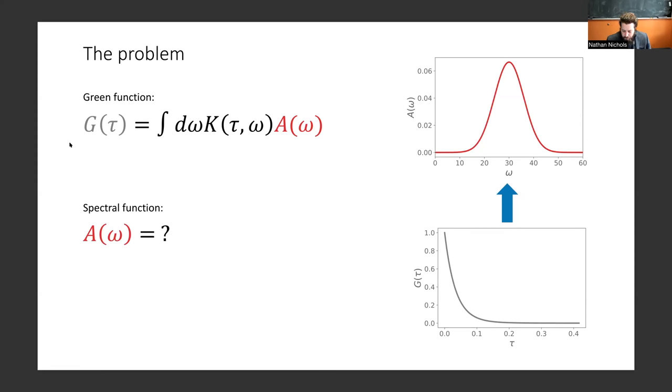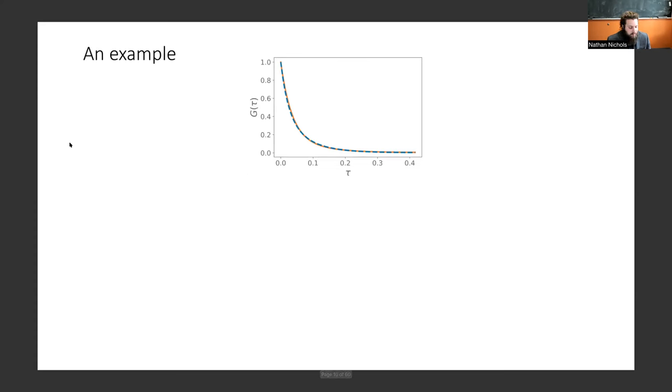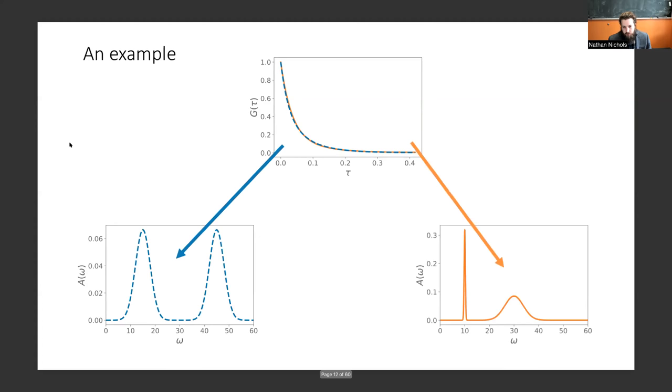How could we approach this problem? One simple approach would be to discretize the integral and then do some linear algebra to achieve the spectral function. But this approach doesn't really work in practice. This inversion under these kernels is an ill-conditioned problem. As you can see, we have two imaginary times Green's functions here, the blue dashed and the orange solid. These are drastically different spectral functions where we have shifts in the peak locations and different peak intensities and widths. Also, the imaginary times Green's functions aren't very different than within the typical quantum Monte Carlo error estimates.